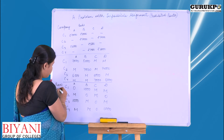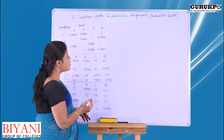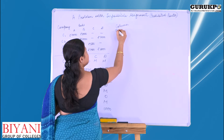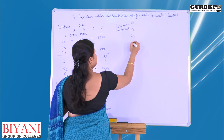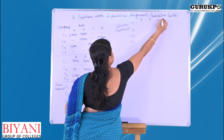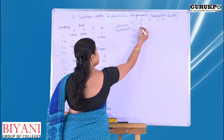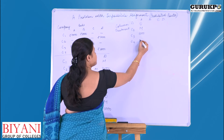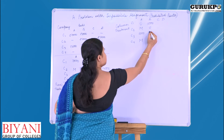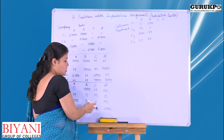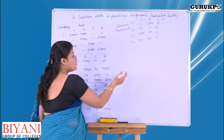Now we are going to move towards the second step, that is column treatment. The least entry in each column is 0, so we will write down the same numbers as they are. Column A, column B, column C, and column D all have 0 as their minimum, so all entries remain the same.